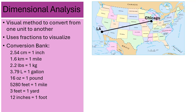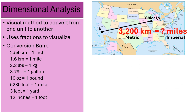In the first problem, here's a map showing Los Angeles to Chicago, Illinois, and the distance is 3,200 kilometers. What if we needed to know how many miles that is? Kilometer is a metric unit and we're trying to figure out miles, which is imperial. I can't just move a decimal point left or right like I would for a metric conversion. So now we're going to use dimensional analysis. I'll start by taking the given number, 3,200 kilometers, and make a fraction by dividing by one — dividing by one doesn't change the value.